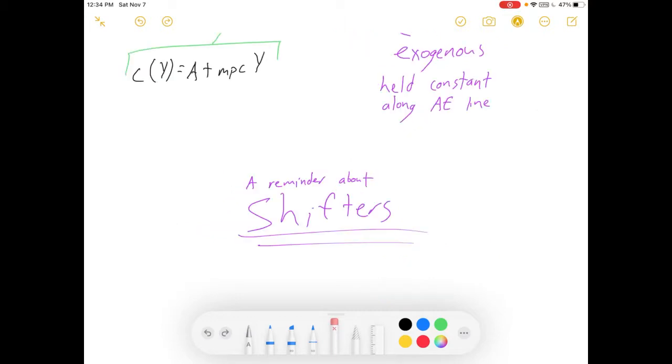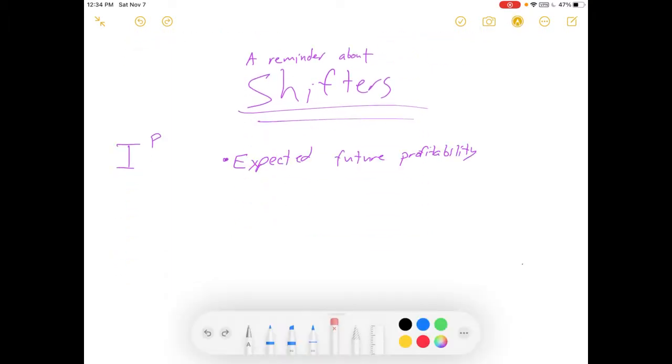So we could get into a little bit more detail on these shifters. What are the things that shift investment? Well we're going to have expected future profitability, interest rate, taxes, and cash flow. I'll leave it to another video to have a greater discussion on all of these. But these can all affect how much investment we plan to take.